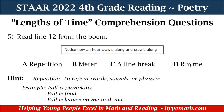Number five says: read line 12 from the poem — 'notice how an hour crawls along and crawls along.' Is that A) repetition, B) meter, C) a line break, or D) rhyme? The hint and answer: repetition means to repeat words, sounds, or phrases. Just as our example used 'fall is' repeatedly, line 12 uses 'crawls along' twice — that is repetition.